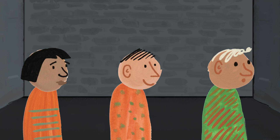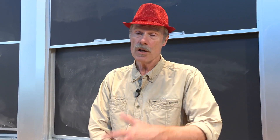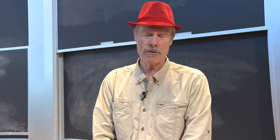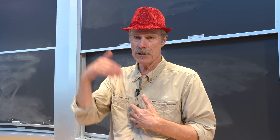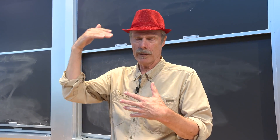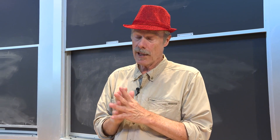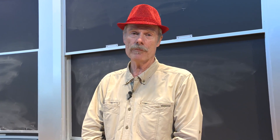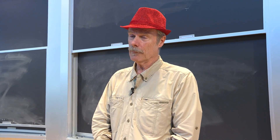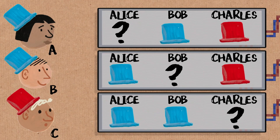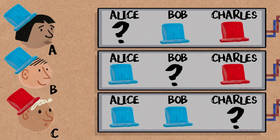One strategy you might try is everybody guesses. Each guess has a probability of one-half of being right, so the chance of winning with that strategy is one out of eight. A better approach: just one person, say Alice, guesses while Bob and Charlie pass. That comes down to a coin flip — Alice has a one-in-two, or 50%, chance of being right. It may seem that nothing better can be done, because anybody who doesn't pass is making a 50-50 guess and there's no connection between the hats — no quantum entanglement. The hats are all placed by coin flip.